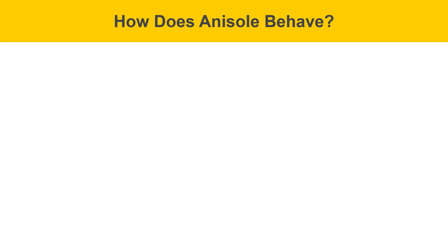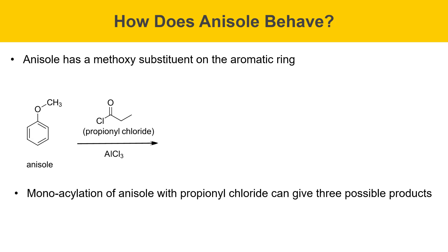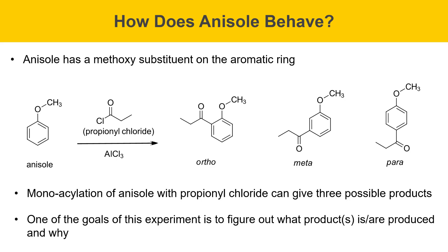The mechanism has been shown with benzene, so how does anisole behave? Anisole has a methoxy substituent on the aromatic ring, and that substituent has a pretty profound effect on the chemistry of this ring. Monoacylation of anisole with propionyl chloride can give three possible products: an ortho product where the acyl group is installed next to the methoxy substituent, a meta possibility where it's one carbon further removed, and a para substitution pattern where the acyl group is added across the ring from the methoxy group. One of the goals of this experiment is to figure out which of these products is or are produced and why.